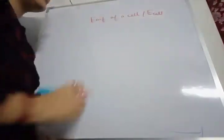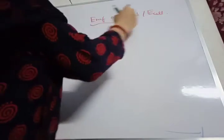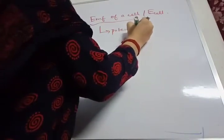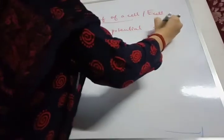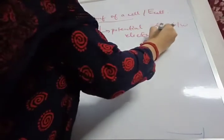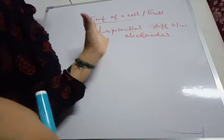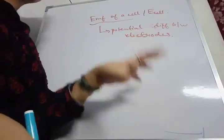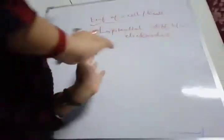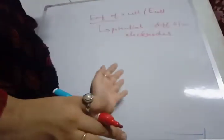Now what is this EMF of a cell? It arises due to the potential difference between the two electrodes — the anode and cathode. Due to the difference in potential between the two electrodes, current will flow from an electrode at higher potential to an electrode at lower potential. The EMF generated is known as EMF of a cell, or E cell.